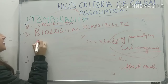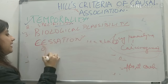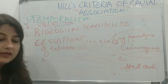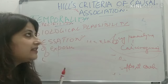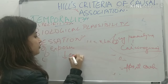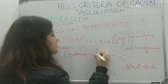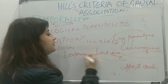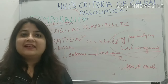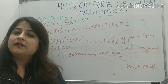The next criterion is cessation of exposure. Simply put, if you decrease or reduce the exposure, there will be a reduced chance of the outcome or disease. So if a person stops smoking or reduces smoking, the chance of occurrence of lung cancer reduces.